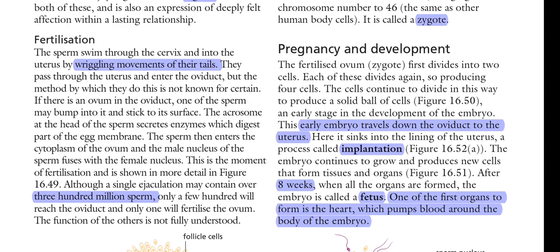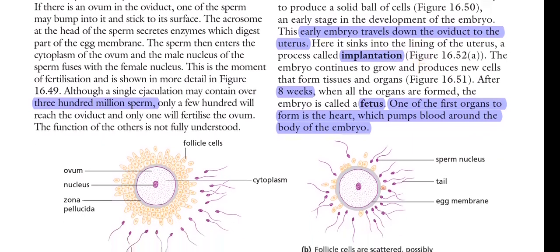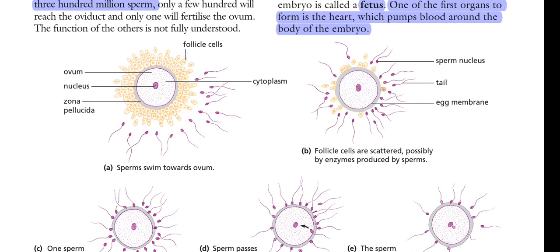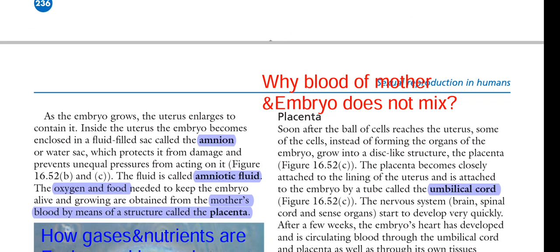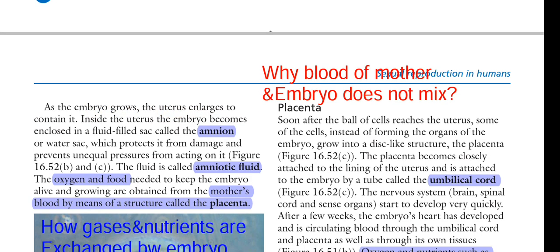The hands and feet develop, and one of the first organs to form is the heart, which pumps blood around the embryo. The heart forms at the 21st day — it is the first organ to form. As the embryo grows, the uterus enlarges to contain it.